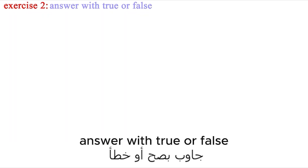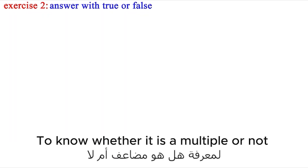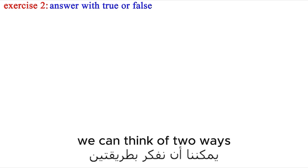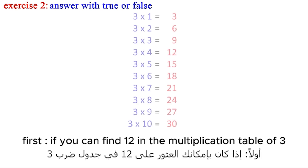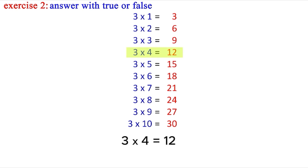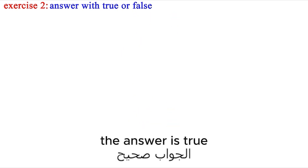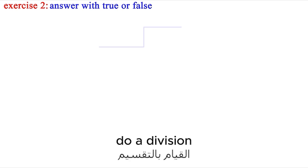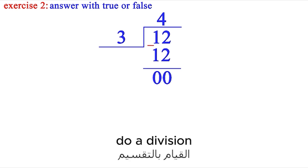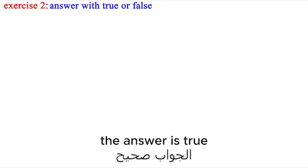Second question: Answer with true or false. Is 12 a multiple of 3? To know whether it is a multiple or not, we can think of two ways. First, if you can find 12 in the multiplication table of 3: 3 times 4 equals 12, so 12 is a multiple of 3 — the answer is true. Second, check if 3 is a divisor of 12 by doing a division. The remainder is 0, so 12 is a multiple of 3 — the answer is true.